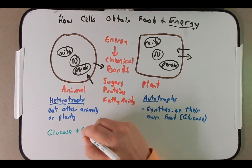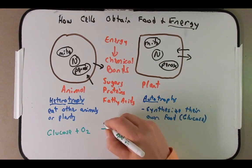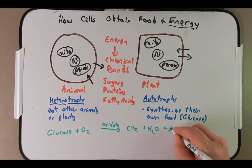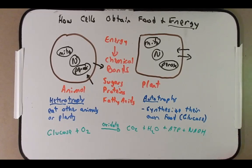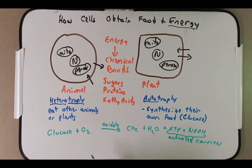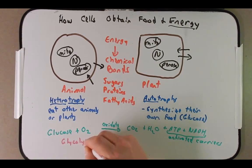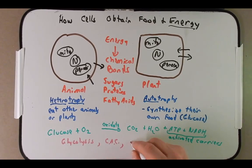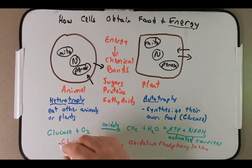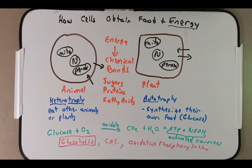They take this glucose and with oxygen they can oxidize this glucose to generate CO2, water, ATP, and NADH. If you remember from a previous chapter, ATP and NADH are activated carriers. We're going to focus on this pathway going from glucose to CO2, water, ATP, and NADH using three separate pathways: glycolysis, the citric acid cycle, and oxidative phosphorylation using electron transport. For the most part, what we're going to talk about today are the events of glycolysis.